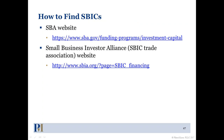If you want to find SBICs, one place to go is the SBA website — we've provided the link on the slide. It has a good description and a list of the approximately 300 funds with SBIC licensing. There is also a very active trade association for SBICs called the Small Business Investor Alliance, or SBIA. The SBIA website has a lot of good information about SBICs and also provides day-long training for investment funds that get SBIC licensing.